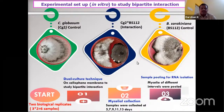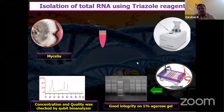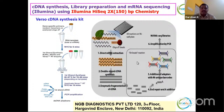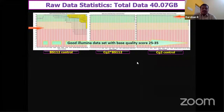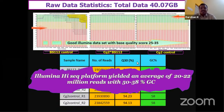Samples were collected at different intervals and pooled. RNA was isolated by TRIzol method and quality was checked using agarose gel and Bioanalyzer. cDNA synthesis, library preparation, and mRNA sequencing were done using Illumina HiSeq 2x150 base pair chemistry. We obtained around 40 GB of data with base quality scores of 25–35, an average yield of 20–22 million reads, and 50–58% GC content. Various bioinformatic tools were used for data analysis.